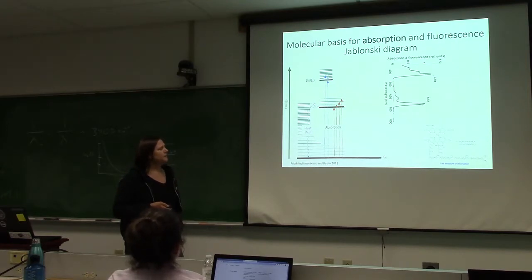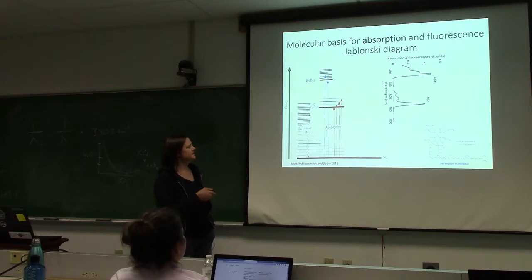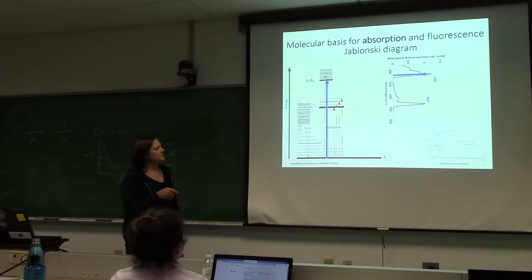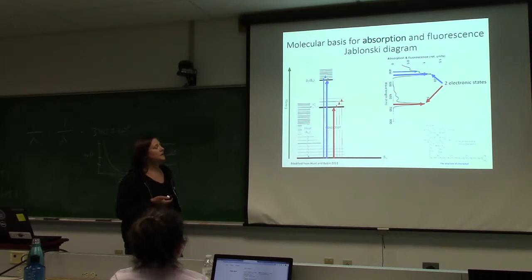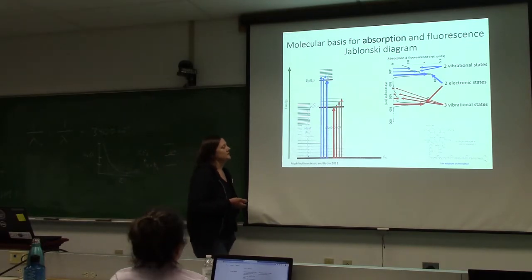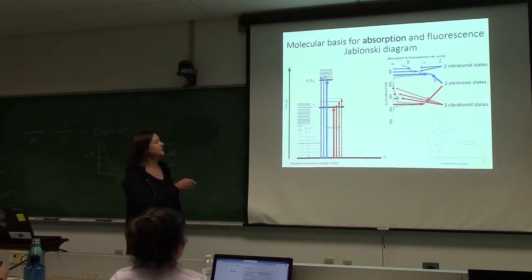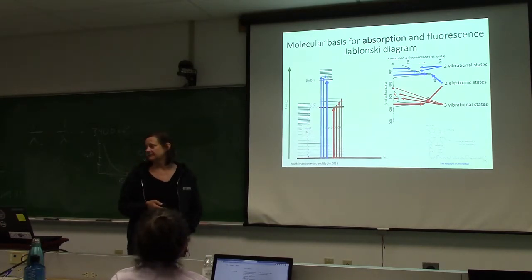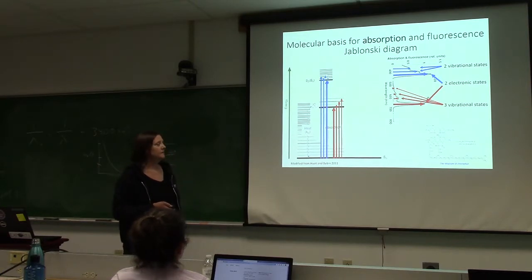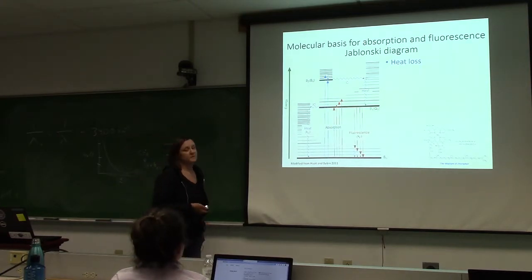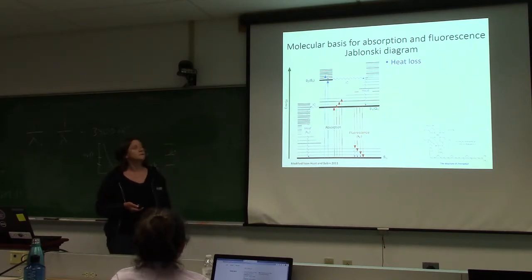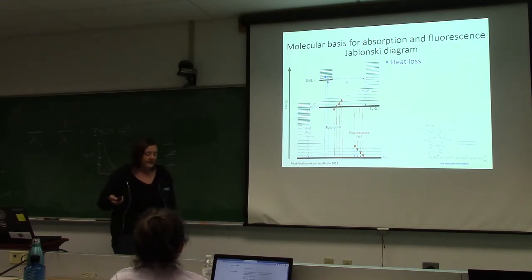Now the energy level diagram. We've got absorption to the higher energy level and absorption to the lower energy level — those are your two peaks in chlorophyll, the two electronic states. We've got all the vibrational states. So there's absorption, and now you've got all this energy in these higher electronic states. The first thing that's going to happen is we get some heat loss in the molecule — all of that energy lost to the vibrational levels goes into heating the molecule.